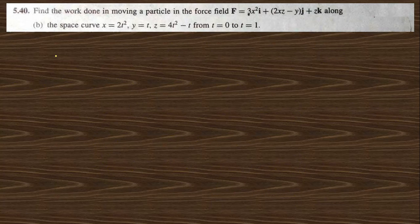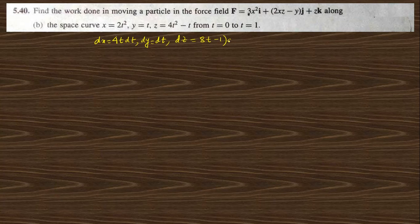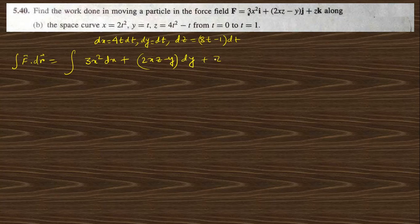For next question (b), the x, y, z are given in parametric form. So dx = 4t dt, dy = dt, and dz = (8t − 1) dt. Then F dot dr is nothing but 3x² dx plus (2xz − y) dy plus z dz.